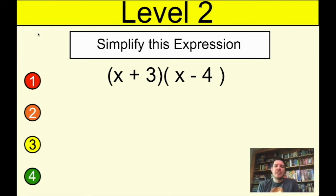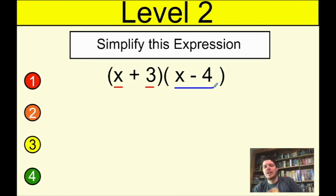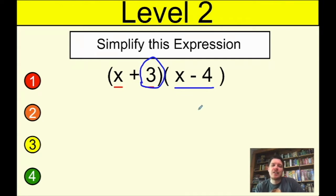I'm going to show you what it means to distribute when you have two sets of parentheses, using this example: (x + 3)(x − 4). The general idea is that we need to distribute both of these into one set of parentheses. You guys are used to distributing just one thing, but this just means we need to do the same thing two different times.